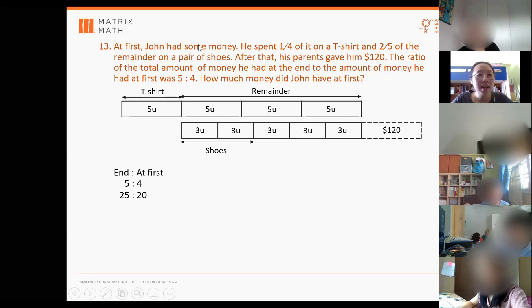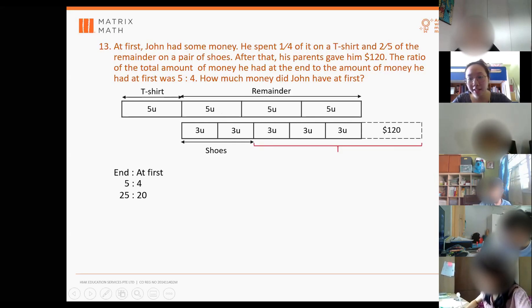So where's the in the end? In the end is the 3U, 3U, 3U. Correct. So this 25 units is actually this whole thing, the one in red color. Because this in the end is after you spend on t-shirts and on the shoes. So whatever you're left with here, plus what the parents gave him, this is the 25 units he has in the end.